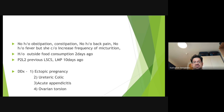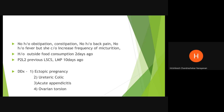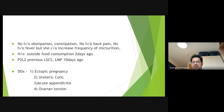Ureteric colic is likely given the urinary tract symptoms. This could be a lower ureteric stone. For ovarian torsion, ask about previous PCOS or known large ovaries, as those are more prone to torsion. Appendicitis remains possible but absence of fever, while not definitive, is one point against it.